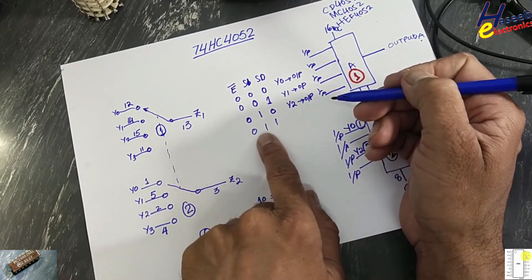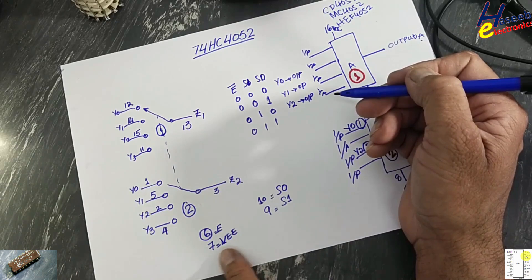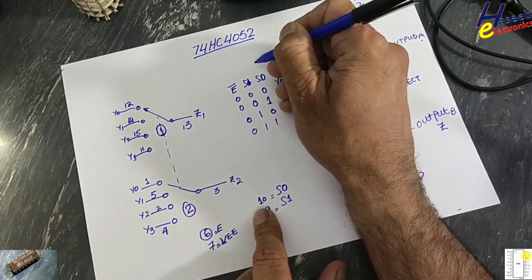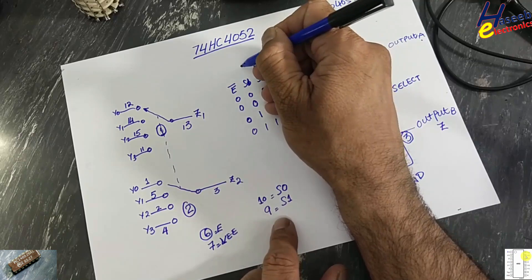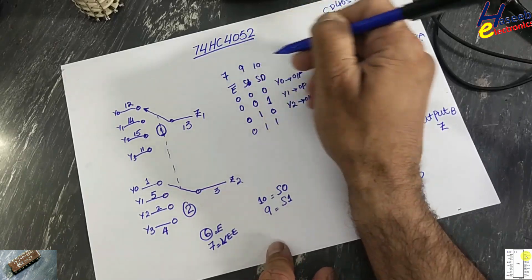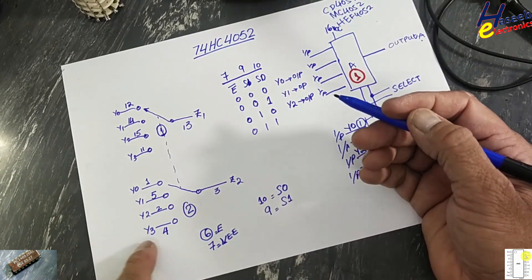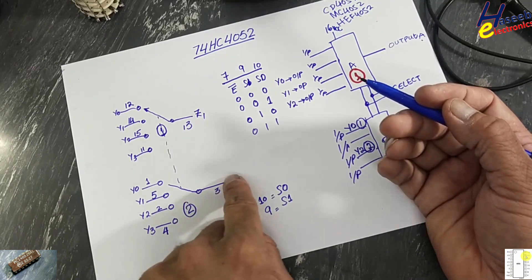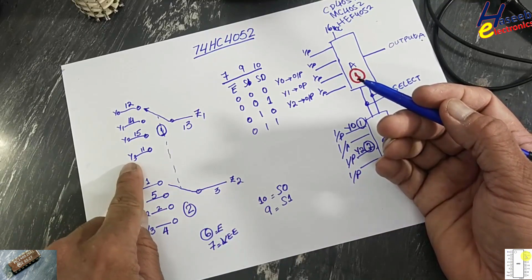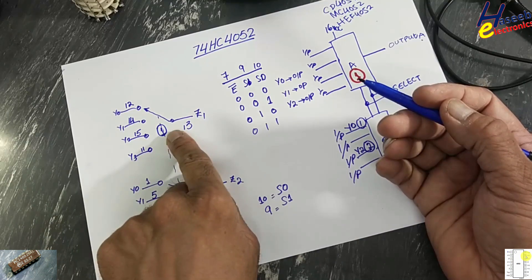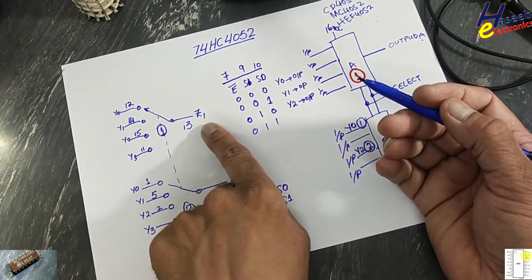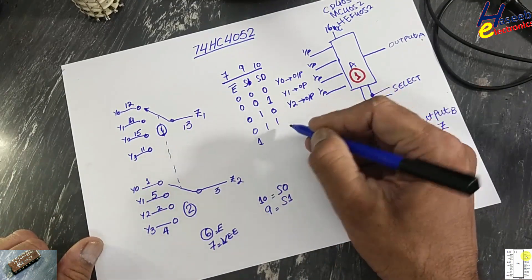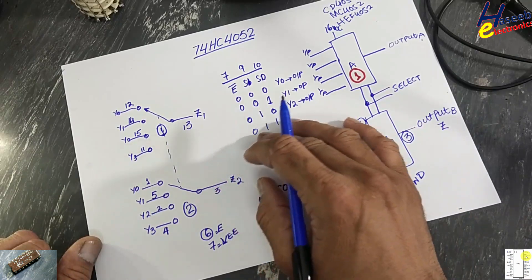If you inject the code 0, 1, 1 at pins 10, 9, and 6 (enable), that time any data present at pin number 4 (Y3) will reach at pin number 3, and pin number 11 will be connected to pin number 13. If the enable pin is high, the IC will be disabled.